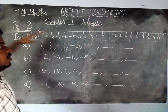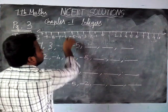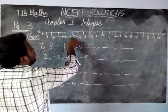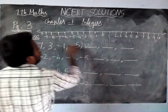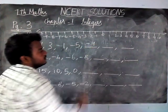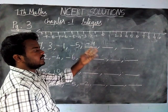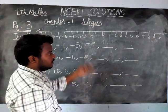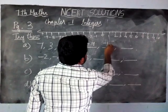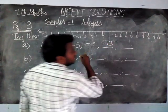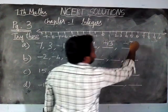Now we are going to write the next number. From -5, moving 4 steps: -9. Next number: -13. Next: -17.